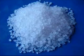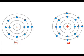The atomic number of sodium and chlorine are 11 and 17 respectively. That means sodium atom has 11 electrons and chlorine atom has 17 electrons in their orbits.